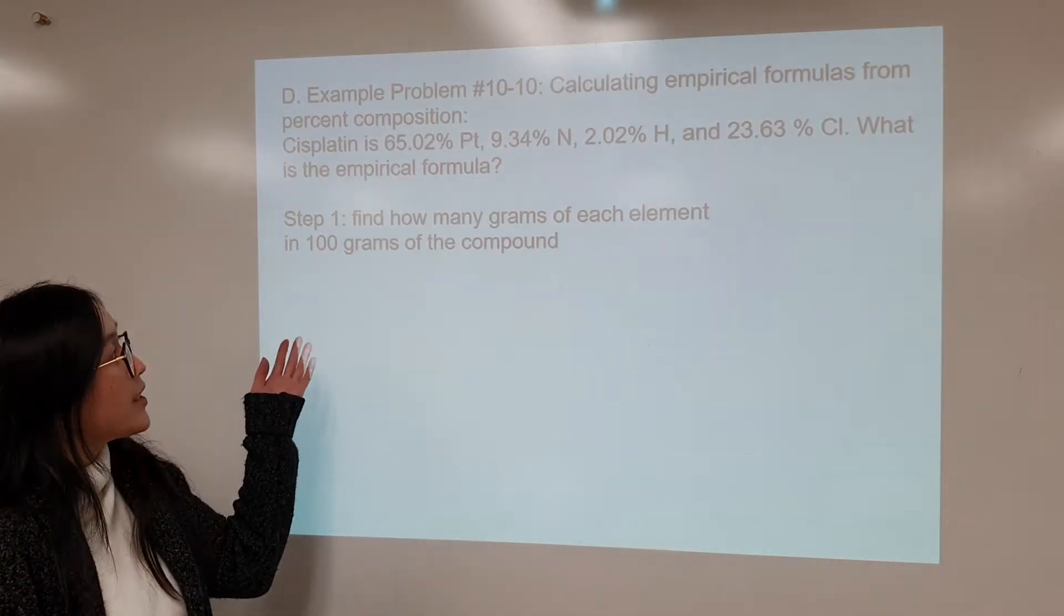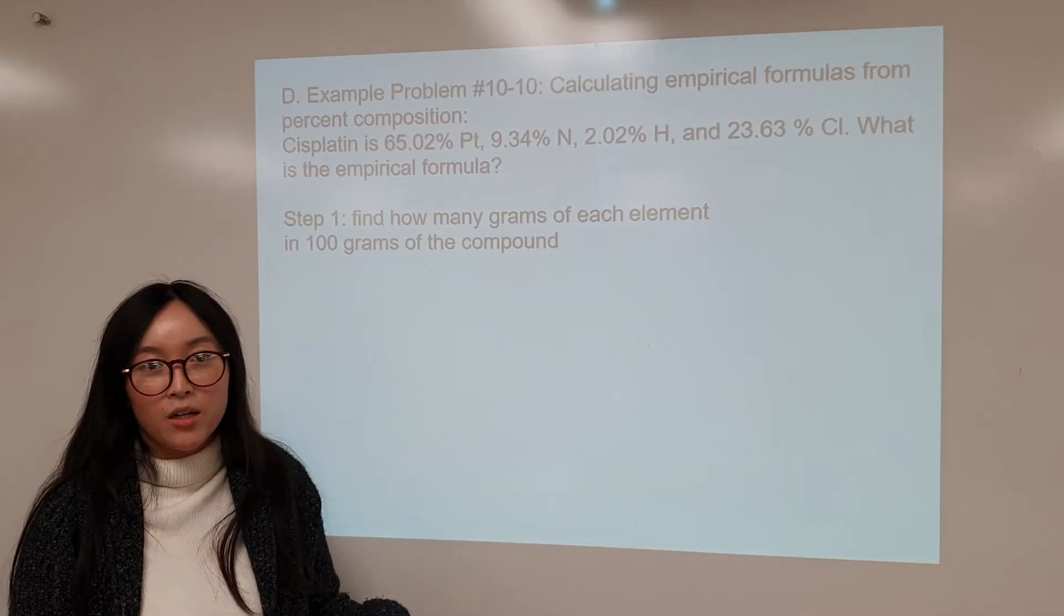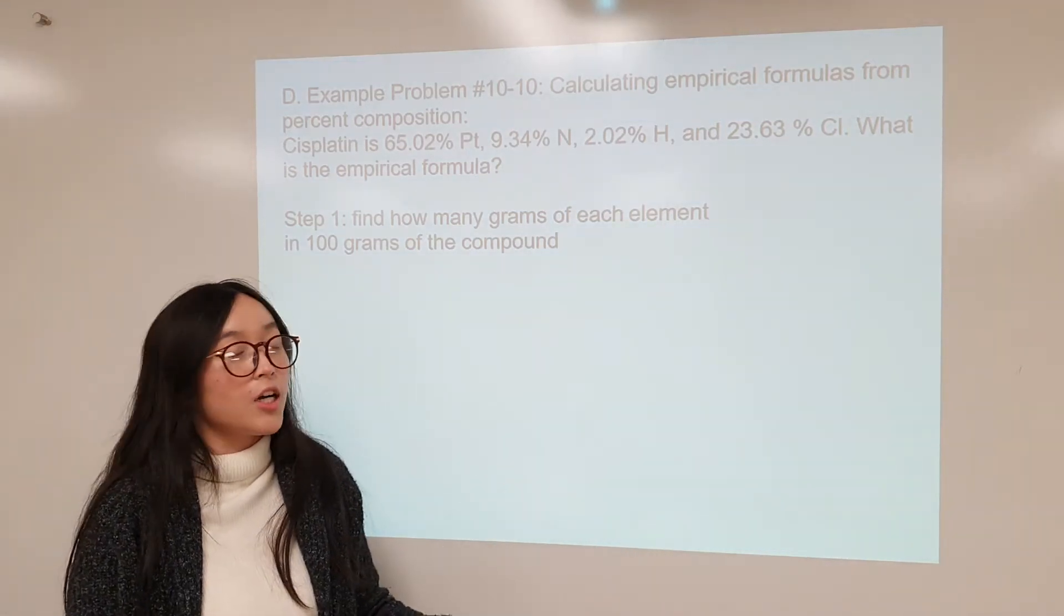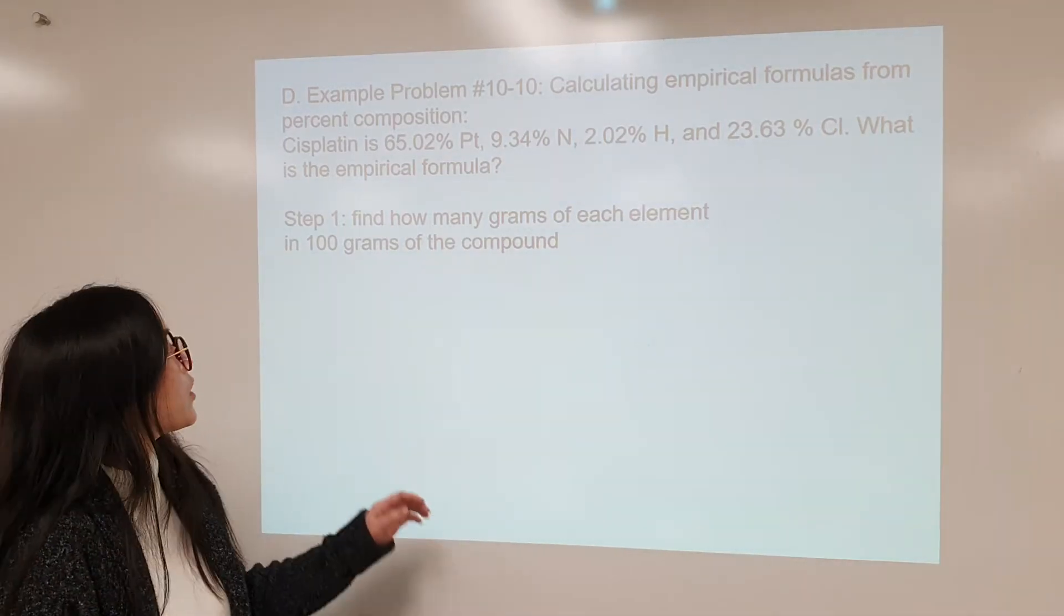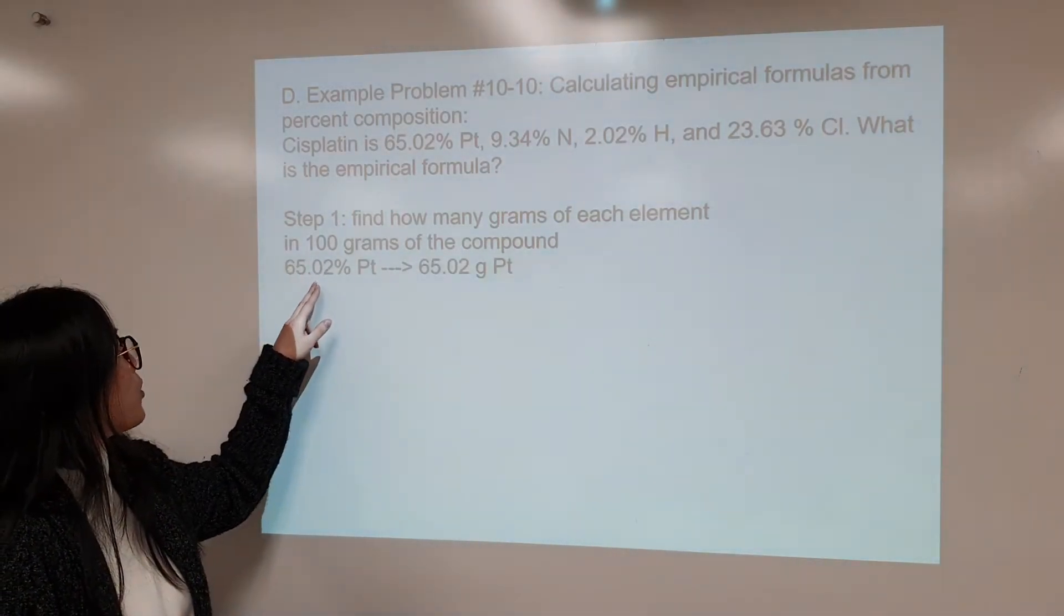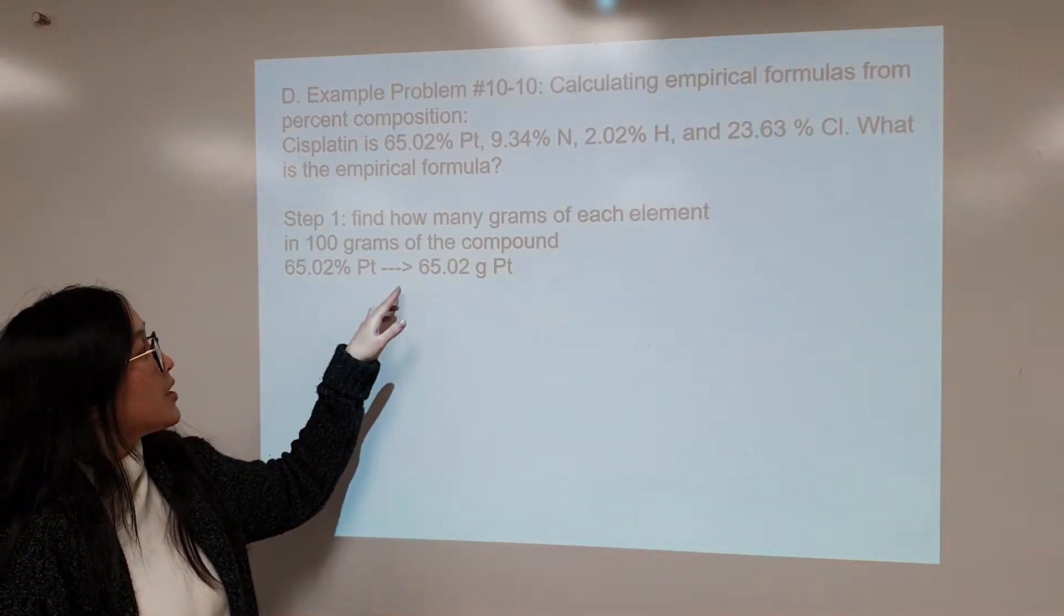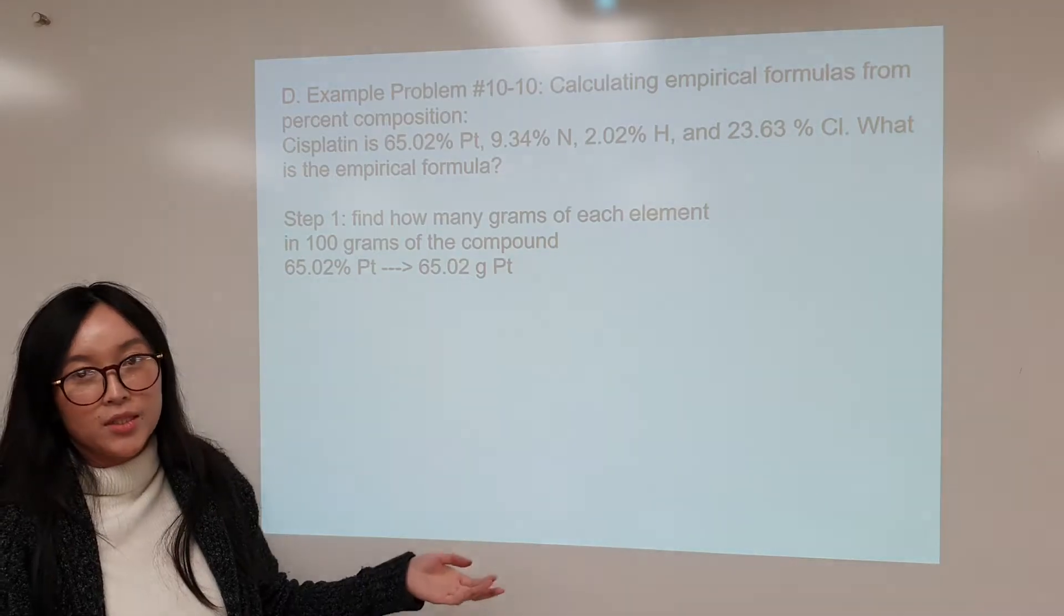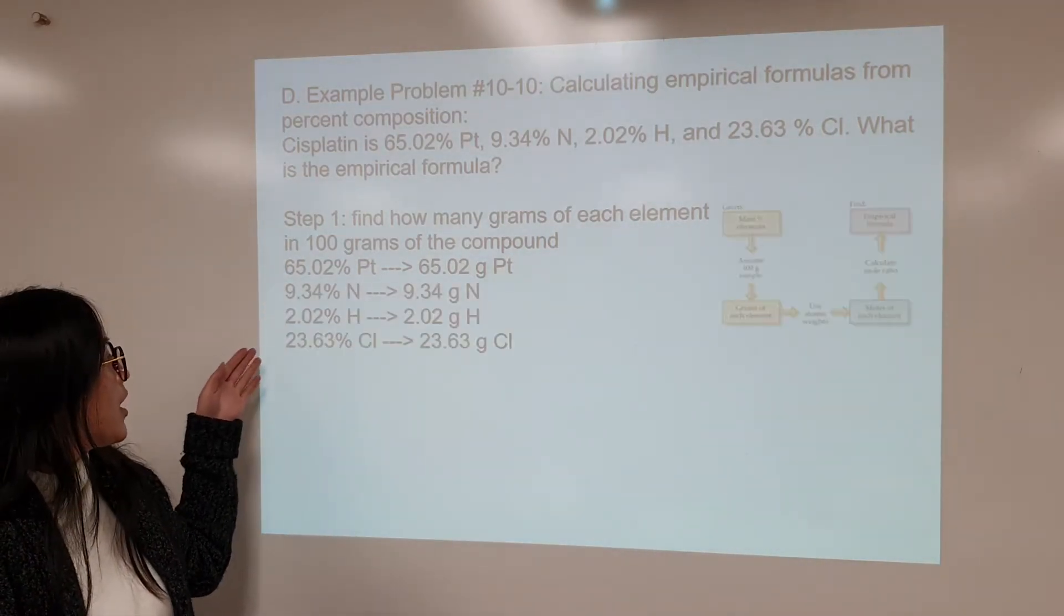So for step one, we want to find out how many grams of each element is within 100 grams of the compound, and we want to use 100 grams of the compound so that we can easily convert these percentages to grams. So here we were able to easily convert it. We have 65.02 percent of the platinum, and we were able to easily convert it to 65.0 grams of platinum and so forth with nitrogen, hydrogen, and chloride.